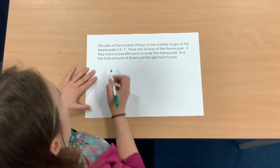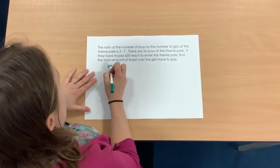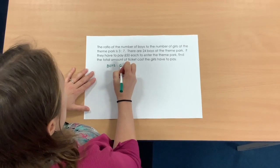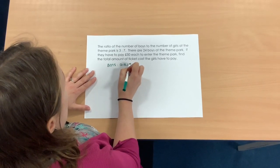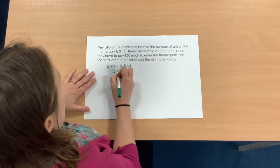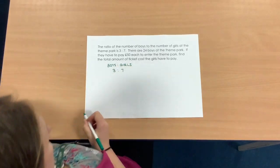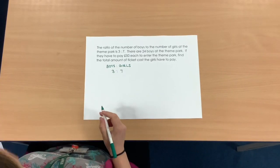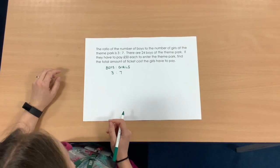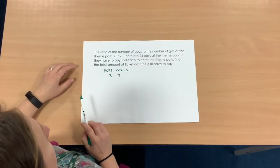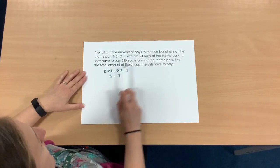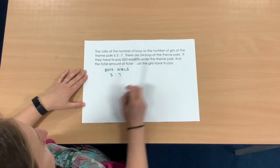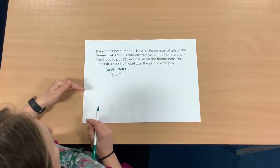So first of all, just like yesterday, I'm just going to make it a bit clearer for myself by just putting my ratio in words and numbers underneath. So we've gone back to two relative sizes. In your sheet, you will have some with two and some with three. Okay, so that's my ratio, and I know there are 24 boys at the theme park. So this is the ratio part of the problem.